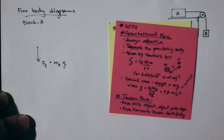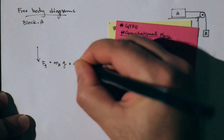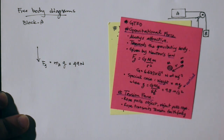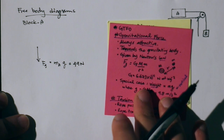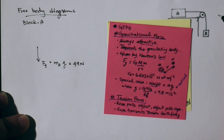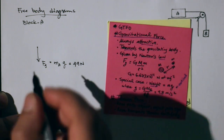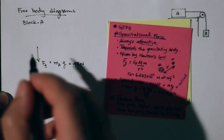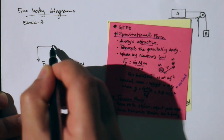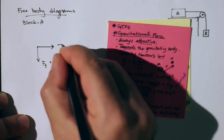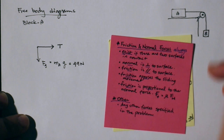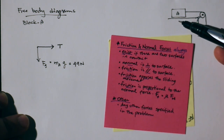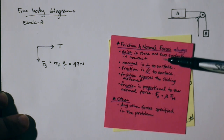In this case we're told the weight of box A is 49 newtons. Then, if there is a tension force, we have to represent that. The rope pulls on the object, so the rope is pulling A to the right. That's how we represent the tension force.